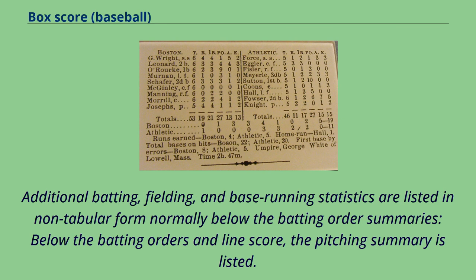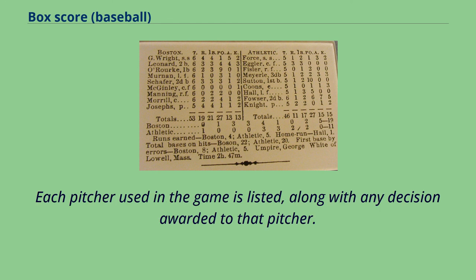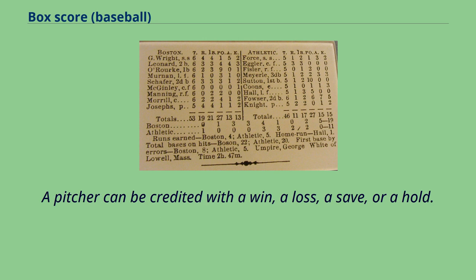Additional batting, fielding, and base running statistics are listed in non-tabular form, normally below the batting order summaries. Below the batting orders and line score, the pitching summary is listed. Each pitcher used in the game is listed, along with any decision awarded to that pitcher. A pitcher can be credited with a win, a loss, a save, or a hold.